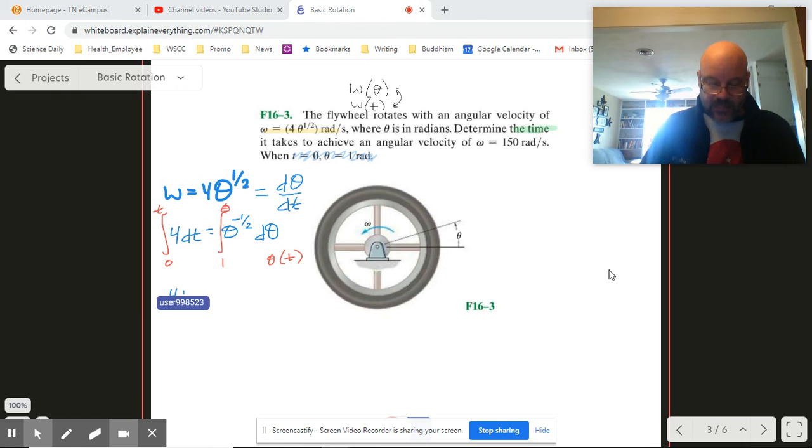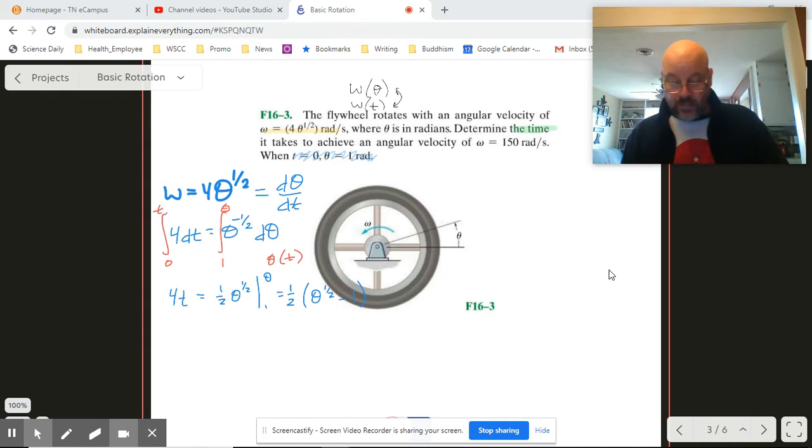So let's pull that off. We've got 4t. It's going to turn into 1 half theta to the 1 half from 1 to theta. Okay. Now this side then, let's go ahead and plug in our limits. We've got theta to the 1 half minus 1.